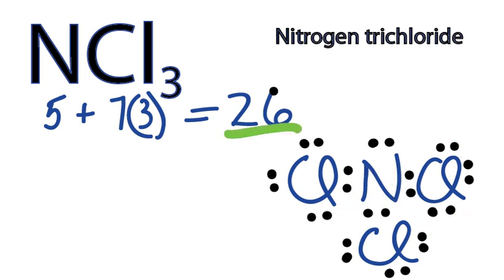We've used all 26 valence electrons. That's it. That's the Lewis structure for NCl3.